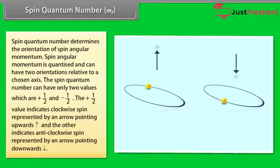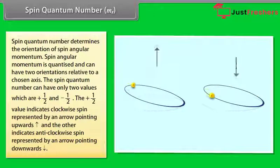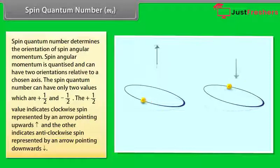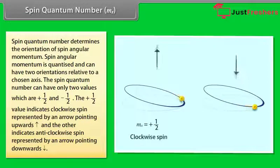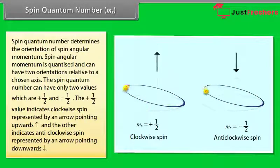The spin quantum number determines the orientation of spin angular momentum. Spin angular momentum is quantized and can have two orientations relative to a chosen axis. This spin quantum number can have only two values: +½ and −½. The +½ value indicates clockwise spin represented by an arrow pointing upwards, and the other indicates anticlockwise spin represented by an arrow pointing downwards.